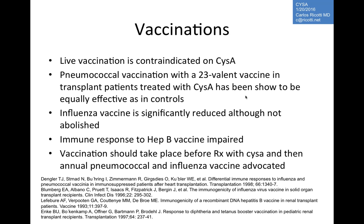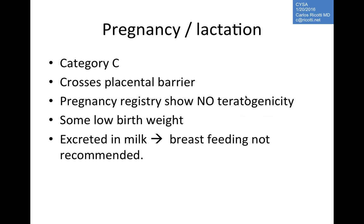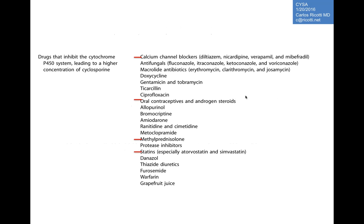Vaccinations: live vaccines are contraindicated. Annual pneumococcal and influenza vaccines should be given. Immune response to hepatitis B vaccines is impaired, so ideally administer before starting cyclosporine. Pregnancy category C — cyclosporine crosses the placental barrier. No teratogenicity has been noted but some low birth weights have been observed. It is excreted in breast milk and should not be given during breastfeeding.